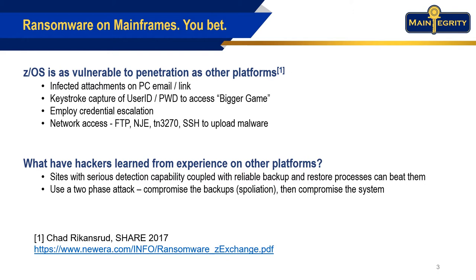What's also emerging in the literature on hacking is that ransomware hackers have learned that sites with detection technology like FIM, coupled with good backup and restore capability, can beat them. The takeaway for the hackers was to launch a two-phase attack: compromise the backups first, and then compromise the system. Chad's slides are available at the link shown on this slide.